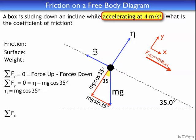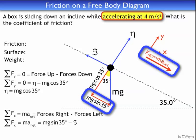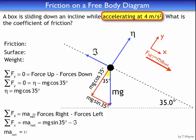Parallel to the incline, I sum the forces in the x direction. There is a net force going down the incline, so instead of equaling zero, this equals MA net because acceleration exists. All forces matching the direction of acceleration are positive, so mg sine 35 is positive. Friction is negative because it goes in the opposite direction. So: MA net equals mg sine 35 minus friction. MA net defines the positive direction.